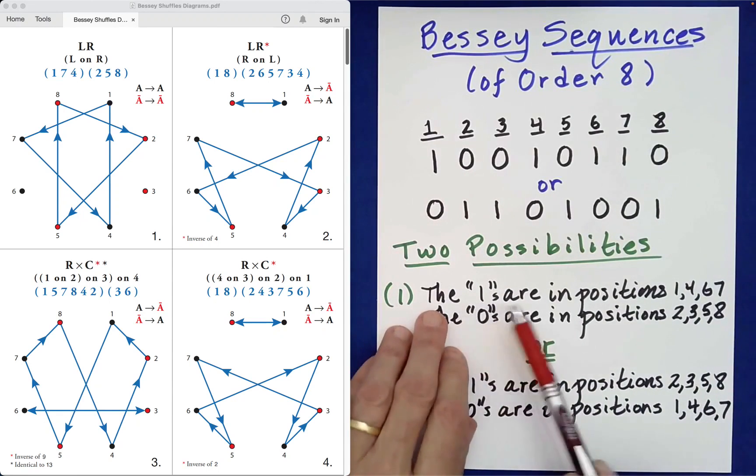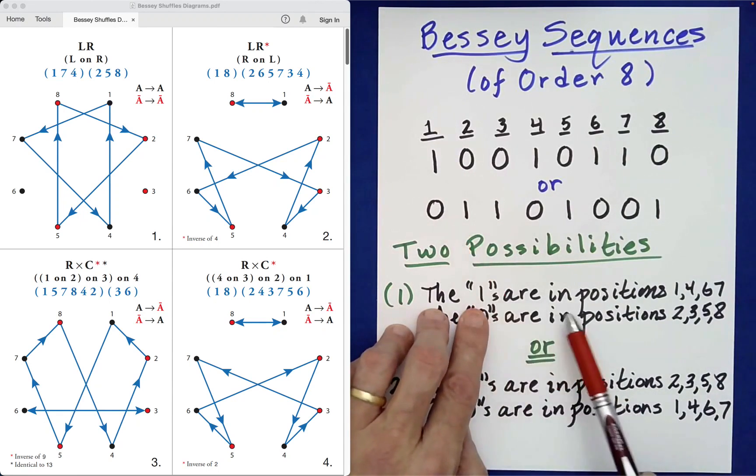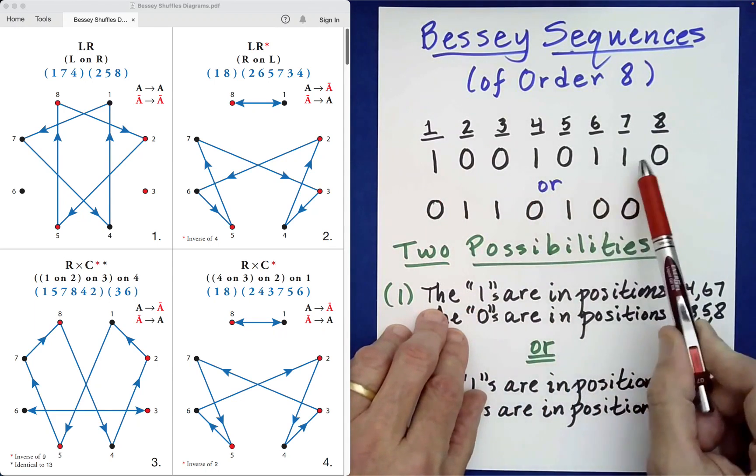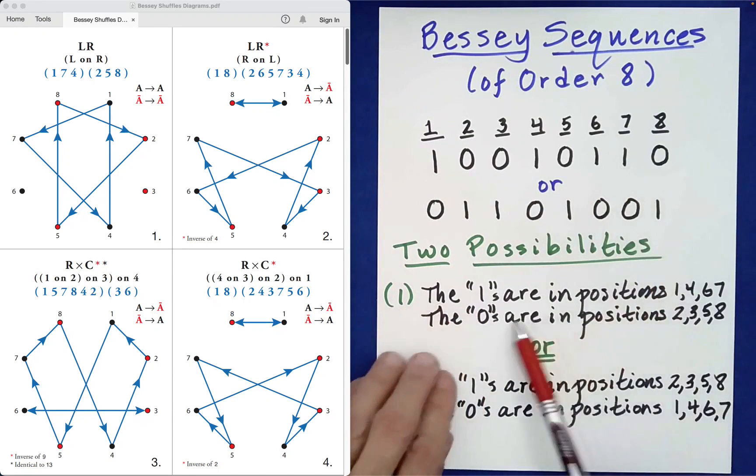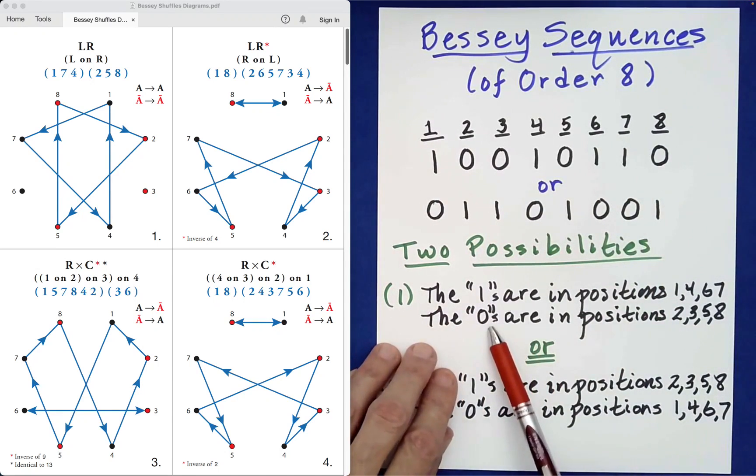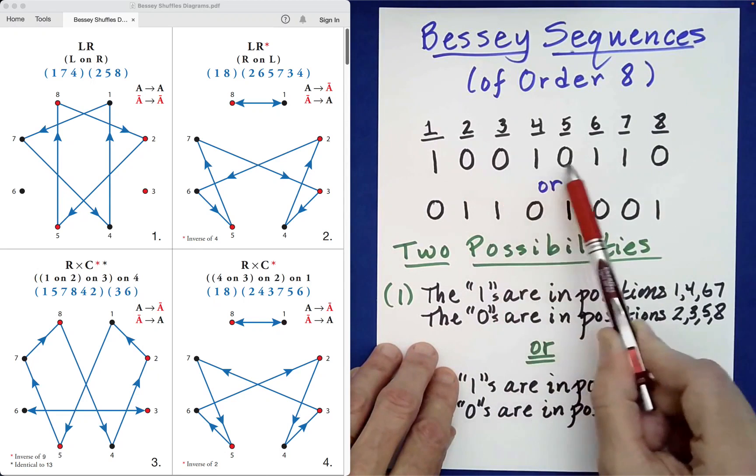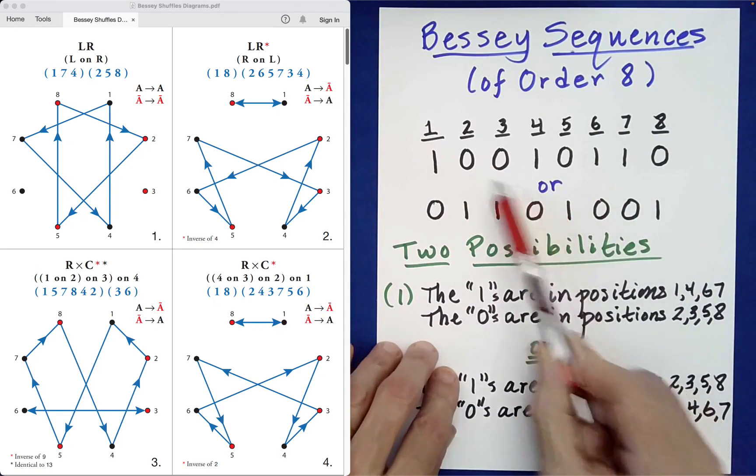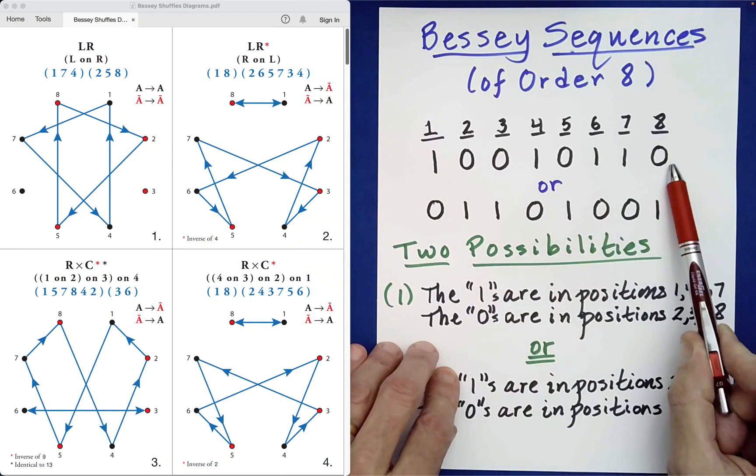First one: the 1's are in positions 1, 4, 6, and 7, and the 0's are in positions 2, 3, 5, 8. Or if we consider the inversion of this Bessey sequence, we get the following.